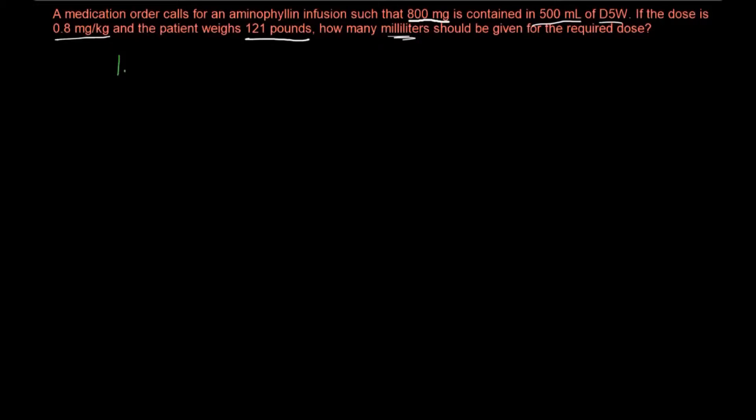The first thing we want to do is determine the actual amount that the patient receives in milligrams. To do that, we can make use of the normalized dose which is given, 0.8 milligrams per kg, normalized to body weight.